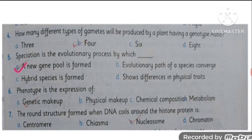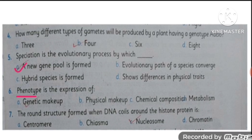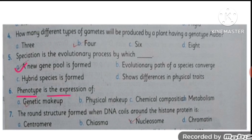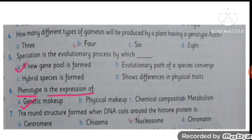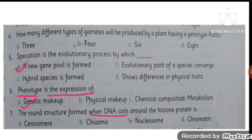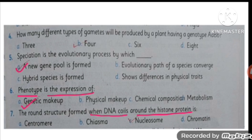MCQ number 6: phenotype, which is basically the physical appearance of an organism, is the expression of its genetic makeup. MCQ number 7: the round structure formed when DNA coils around the histone protein is called a nucleosome.